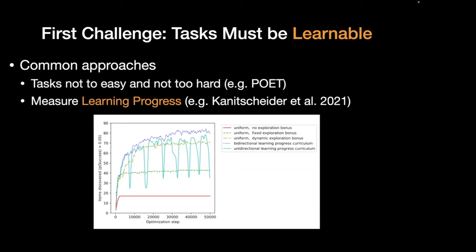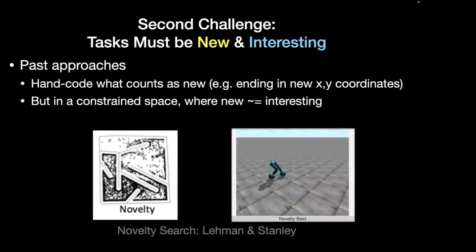One work I want to highlight, because we're going to build on it, is some recent work I did at OpenAI with Ingmar Ekanitschneider. The idea is you basically look for tasks and you focus on tasks that the agent can actually learn. But the problem is that even if you have tasks that are only learnable, you want tasks that are new and interesting.